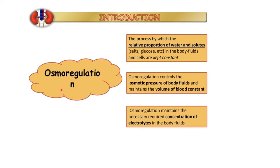The second part is osmoregulation. It is a process by which the relative proportion of water and solvents like salts and glucose in the body fluid and cells are kept constant. Osmoregulation controls the osmotic pressure of the body fluid and maintains the volume of blood constant. It also maintains the necessary concentration of electrolytes in the blood — what is necessary is kept, and what is unnecessary is thrown out.